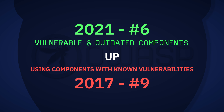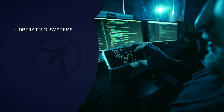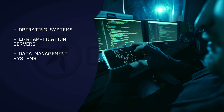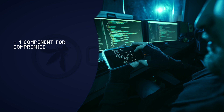Vulnerable and outdated components, previously known as using components with known vulnerabilities, is up at number 6 from number 9. By OWASP's own admission, this category is difficult to test but featured highly in the community survey. It includes operating systems, web or application servers, database management systems, APIs, all components, runtime environments, and libraries that are vulnerable, unsupported, or out of date. An adversary only needs to find one vulnerable component to compromise a system — and approximately 18,000 new vulnerabilities are found each year, so protecting against known vulnerabilities is an ongoing process.